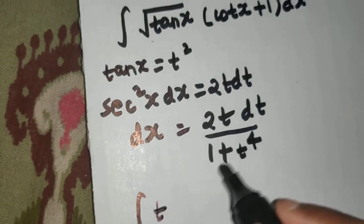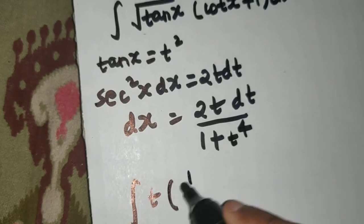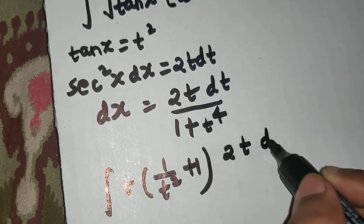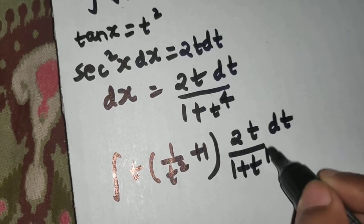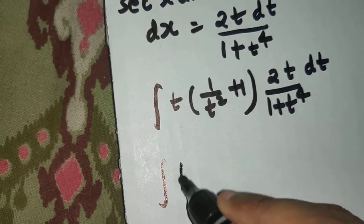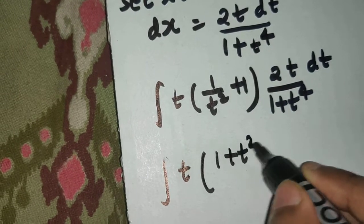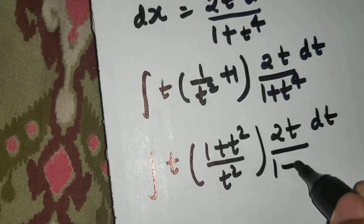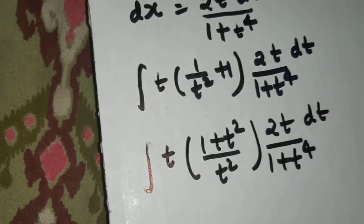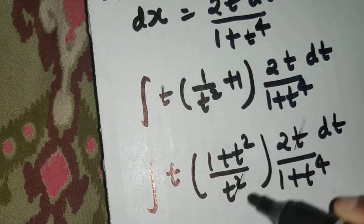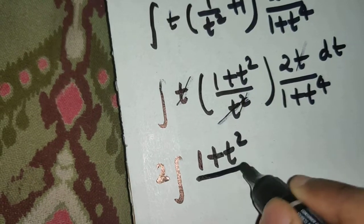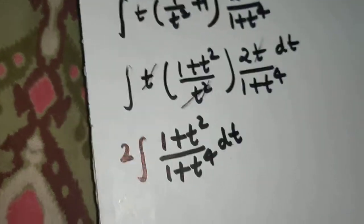Coming back to my integral: √(tan x) will be √(t²) = t. Cot x is 1/tan x, so 1/t² + 1. And dx will be 2t dt divided by 1 + t⁴. Simplifying, t cancels one power here and one power there, so I'm left with the integral of 2 · (1 + t²) / (1 + t⁴) dt.